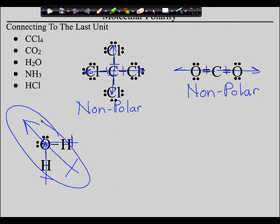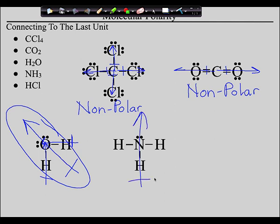NH3 — we understand to be what shape? Trigonal pyramid. Which is more electronegative, the nitrogen or the hydrogen? The nitrogen. Let's try this without the individual arrows. What direction is this bond moving? Left. What direction is this bond moving? Up. What direction is this bond moving? To the right. Is it symmetrical? No — it's clearly not symmetrical. So what does left and right and up add up to? It adds up to up. The overall movement of the electrons is in that direction. Left and right and up all end up going up — that would be the polarity of the molecule.